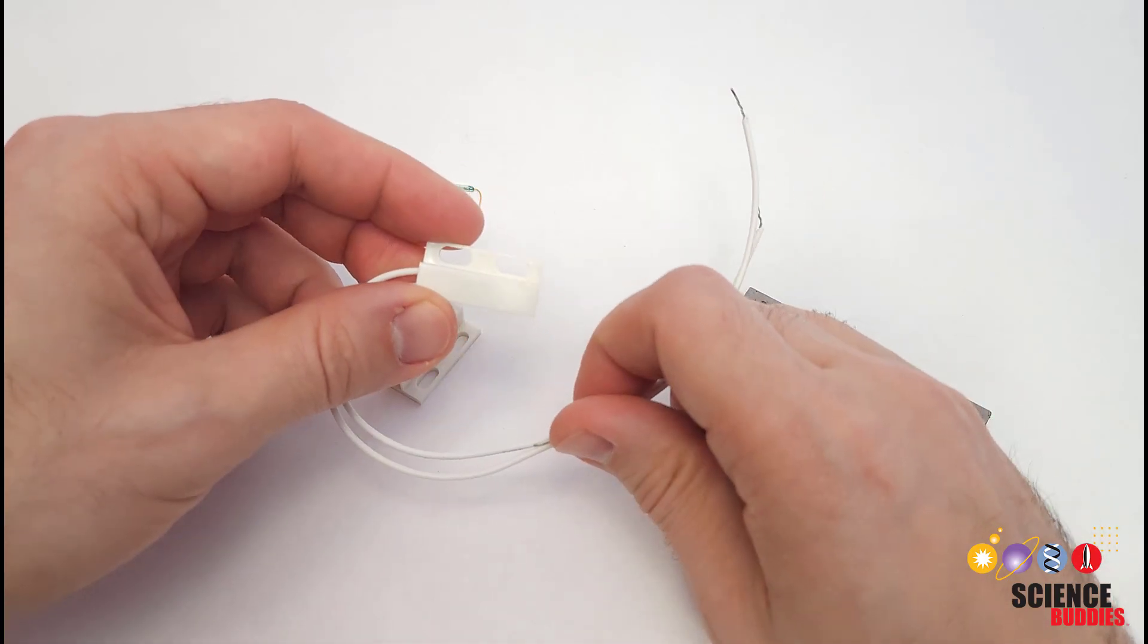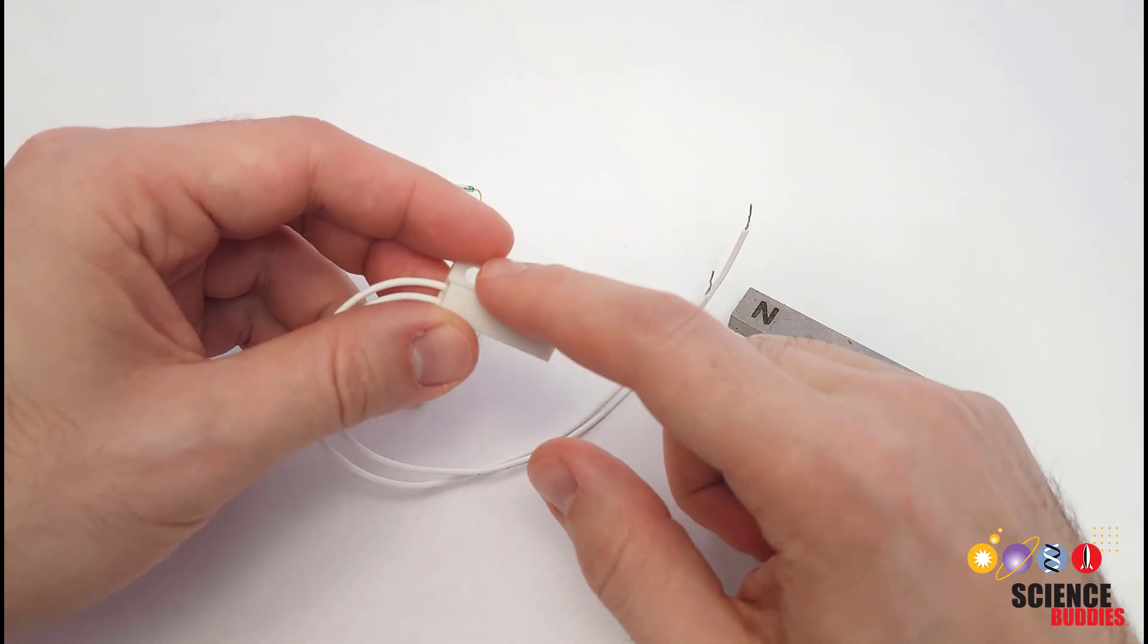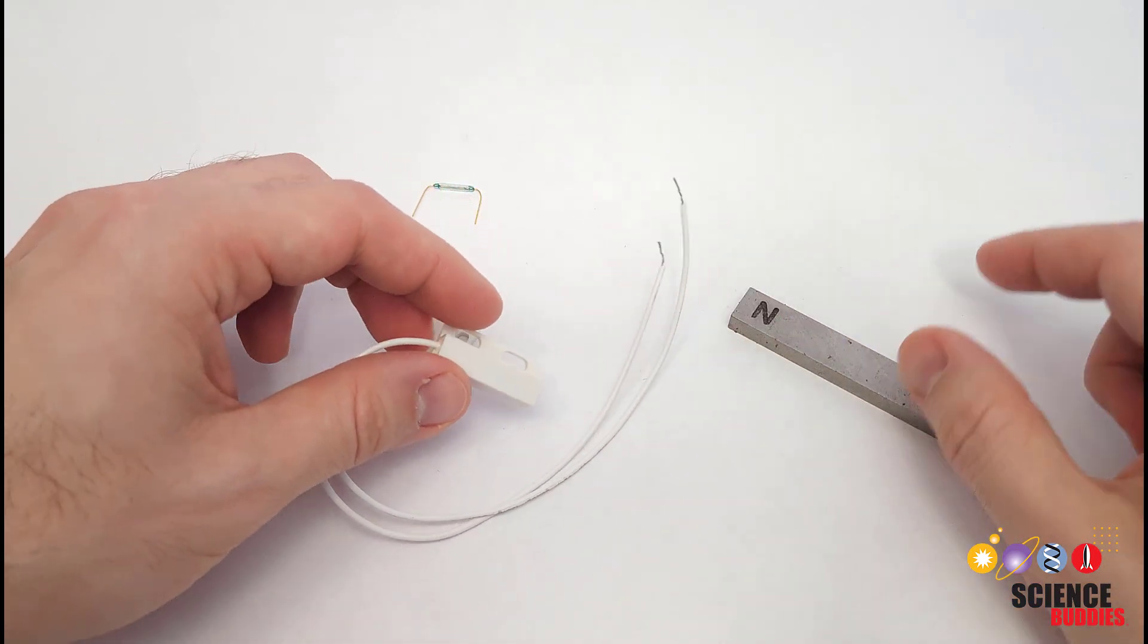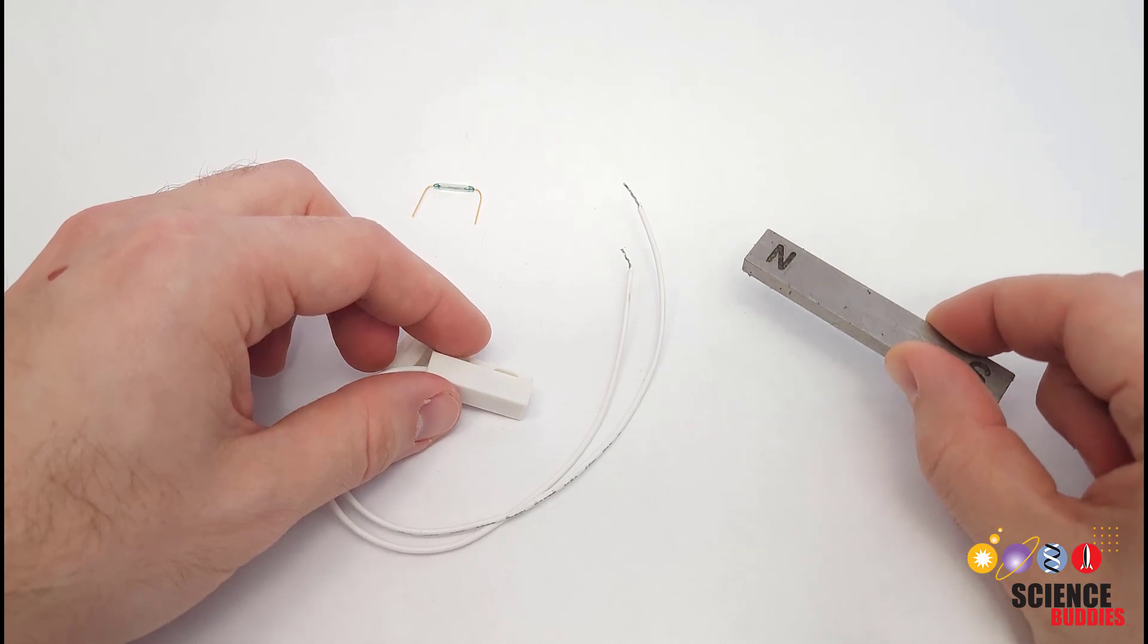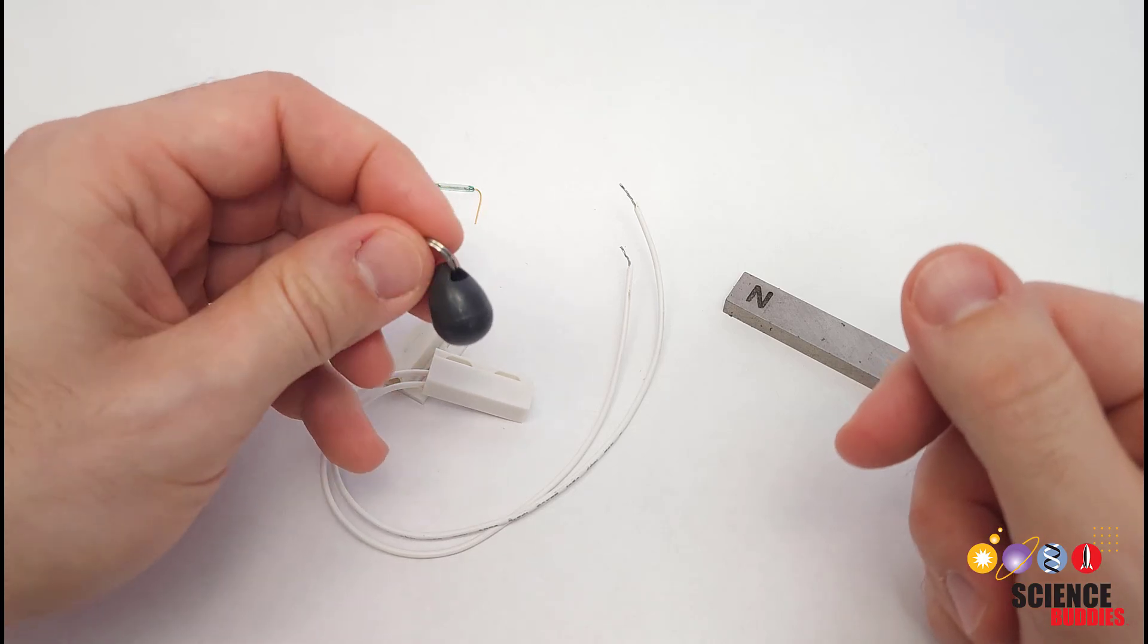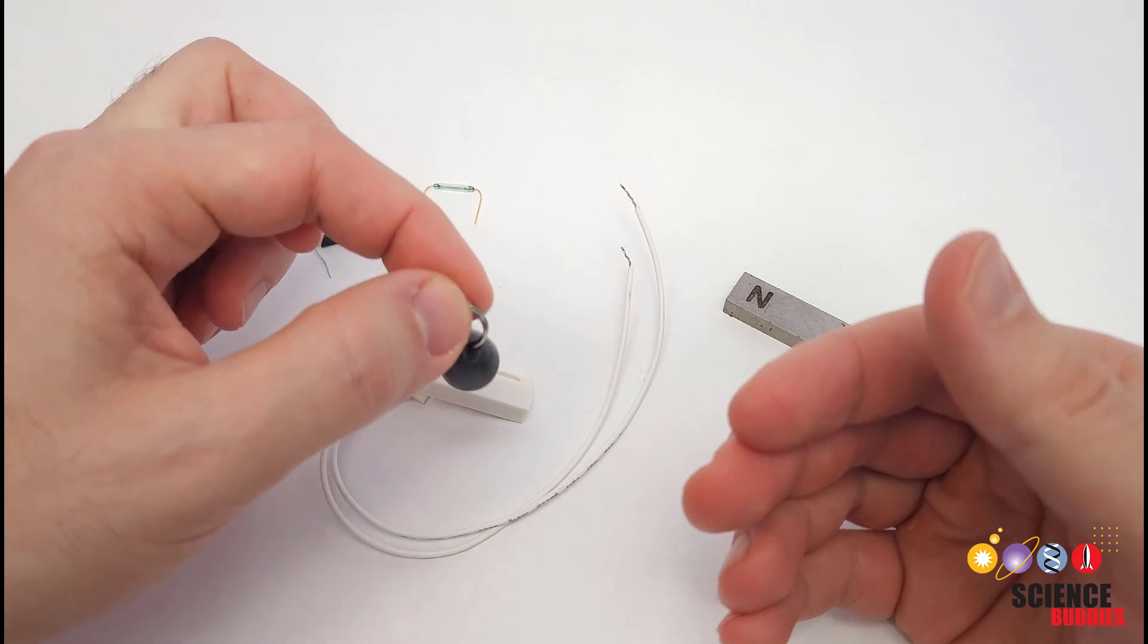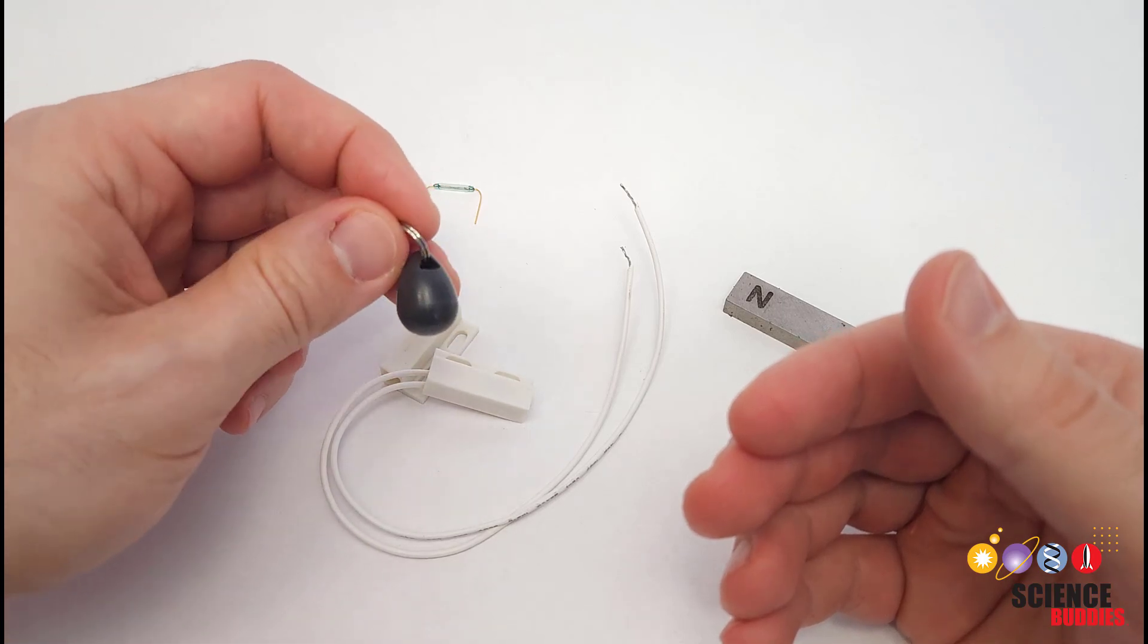And then the other side has the reed switch inside with wires coming out to connect to your Arduino with screw holes so you can mount it to the window or door frame. You also don't have to use a bar magnet. Pretty much any other type of magnet will work. For example, here I have a magnetic pet collar tag if I wanted to do something like detect when a pet is getting near something or going in and out of a pet door.